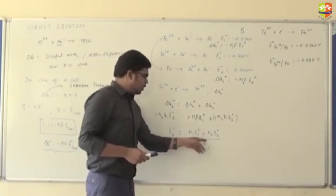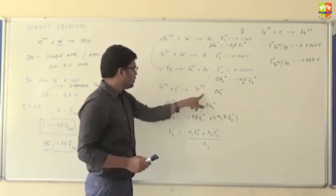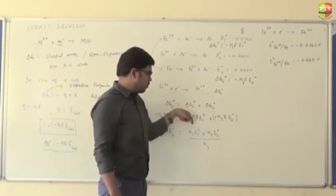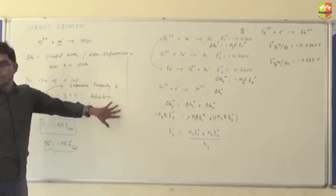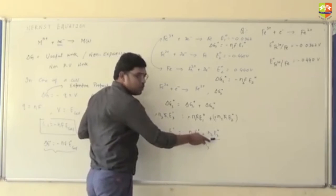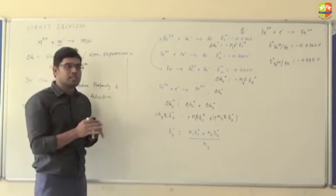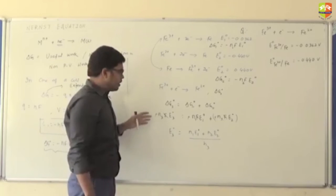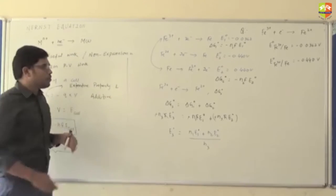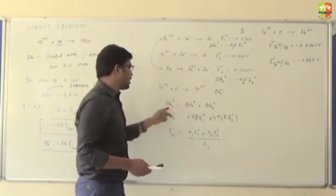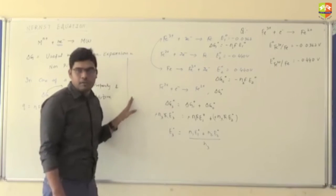Now, N₁ is 3, N₂ is 2, and N₃ is 1. If N₁, N₂, and N₃ were all equal, they would cancel and E₃ would simply equal E₁ plus E₂. But since they are not equal, we cannot add EMF directly. That is one special case when electron exchanges are equal. Otherwise, you must use delta G: find delta G, add or subtract according to the reaction, substitute delta G in terms of E of the cell, then find EMF.